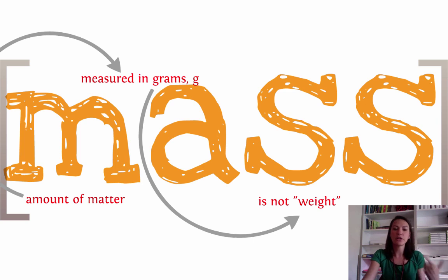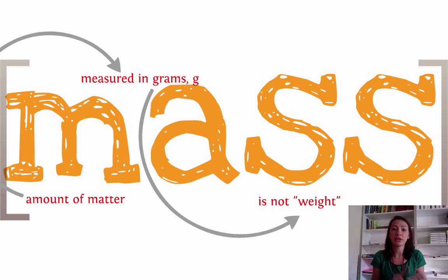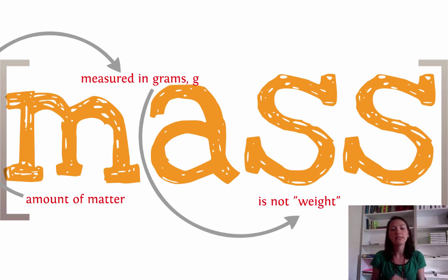Start thinking about how we're going to measure mass — it's measured in grams. We're going to use something called an electronic balance or a triple beam balance to help us measure mass.